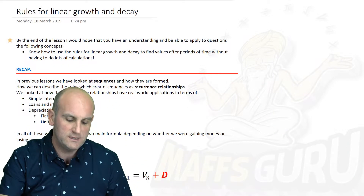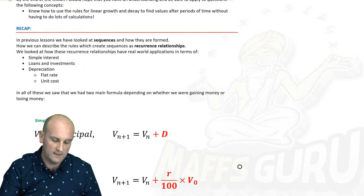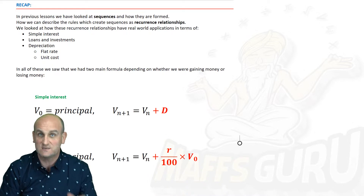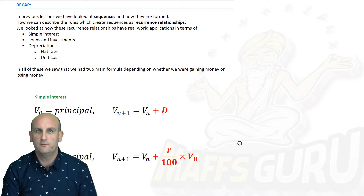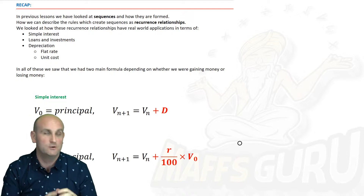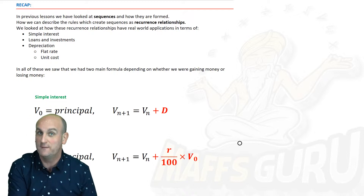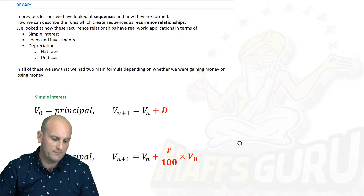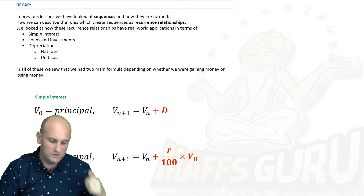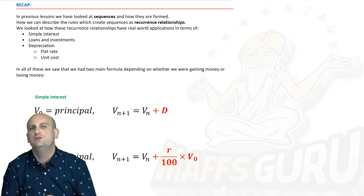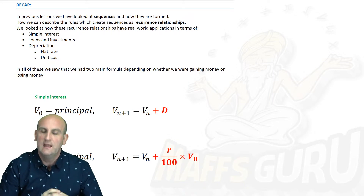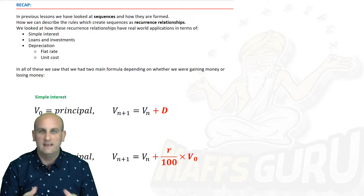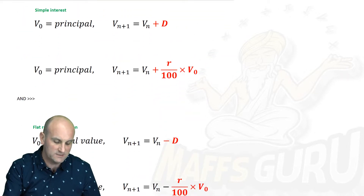Now, in a recap, which is what I do very well — previously we've been looking at sequences and how they're formed. The first lesson was about sequences. Then we moved on to recurrence relationships — how do they describe sequences? Can we formally write them? And we looked at simple interest, loans and investments, and we looked at depreciation, both flat rate and unit cost. And basically, we found that there was sort of a link — pretty much the same formula.